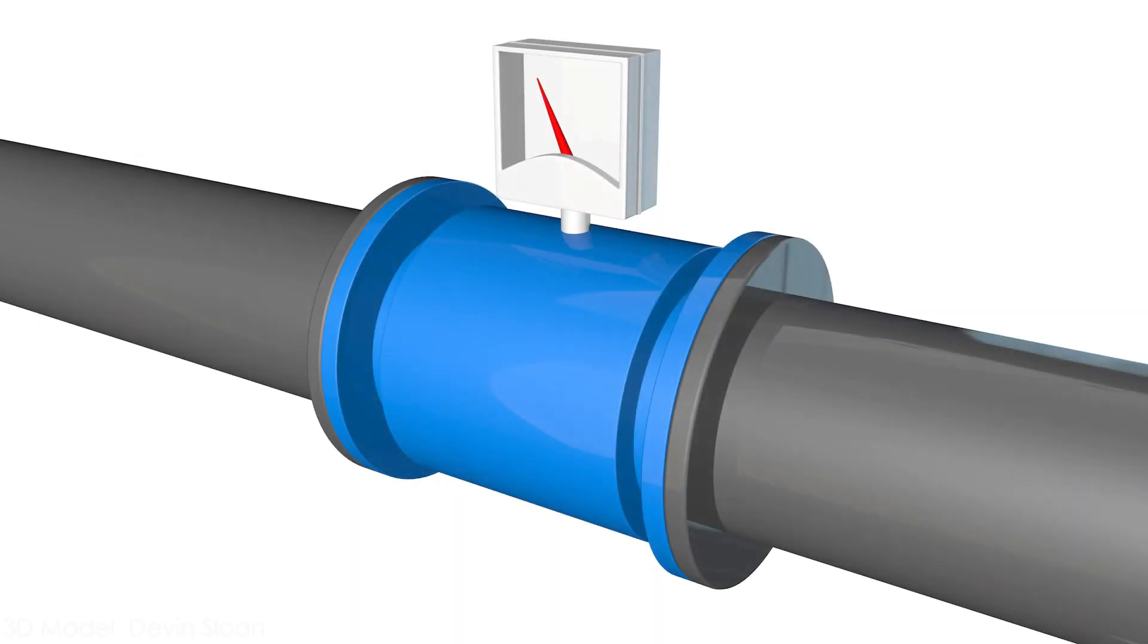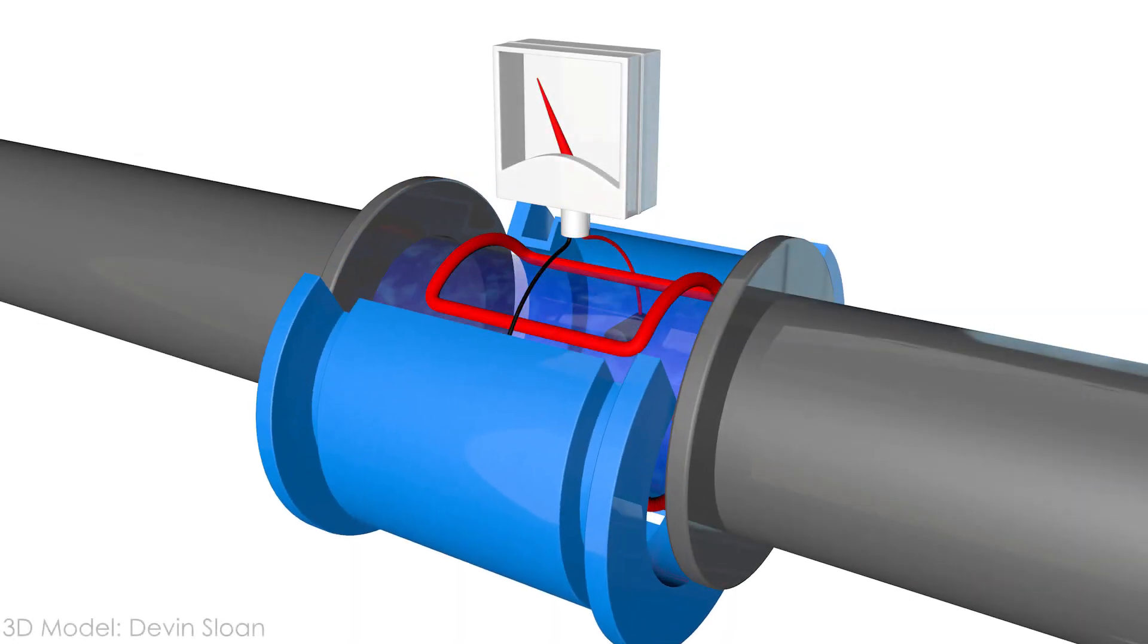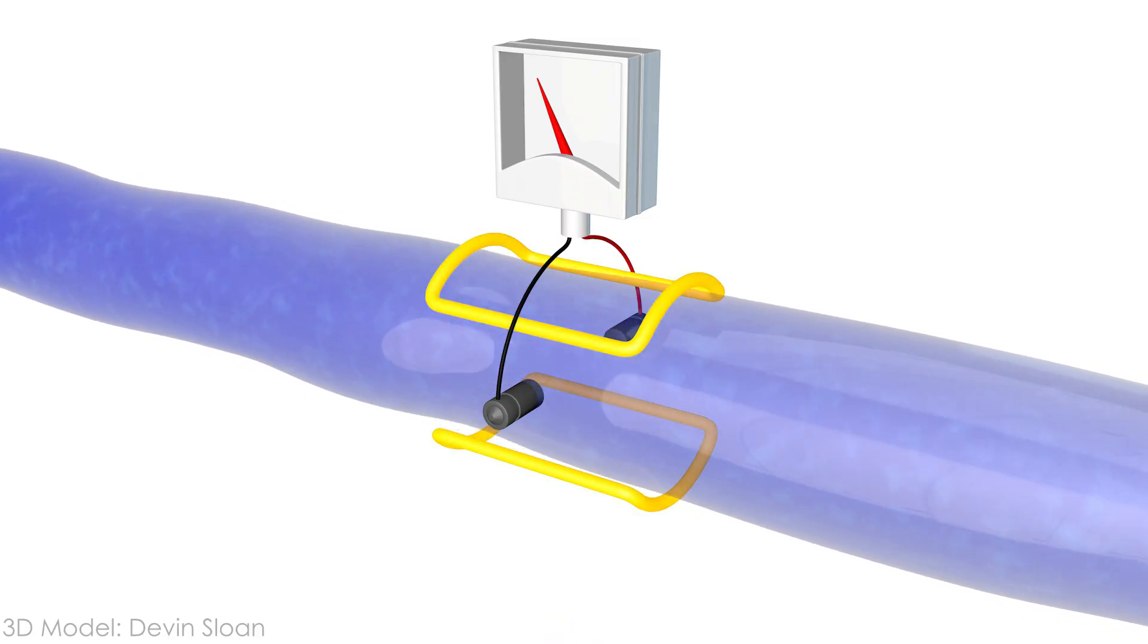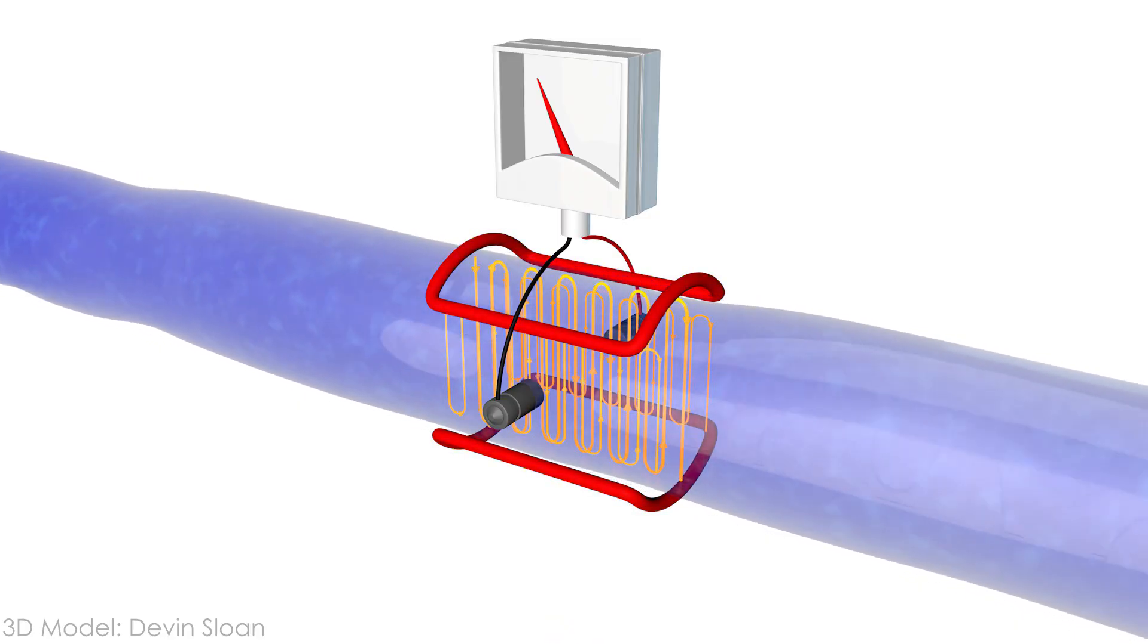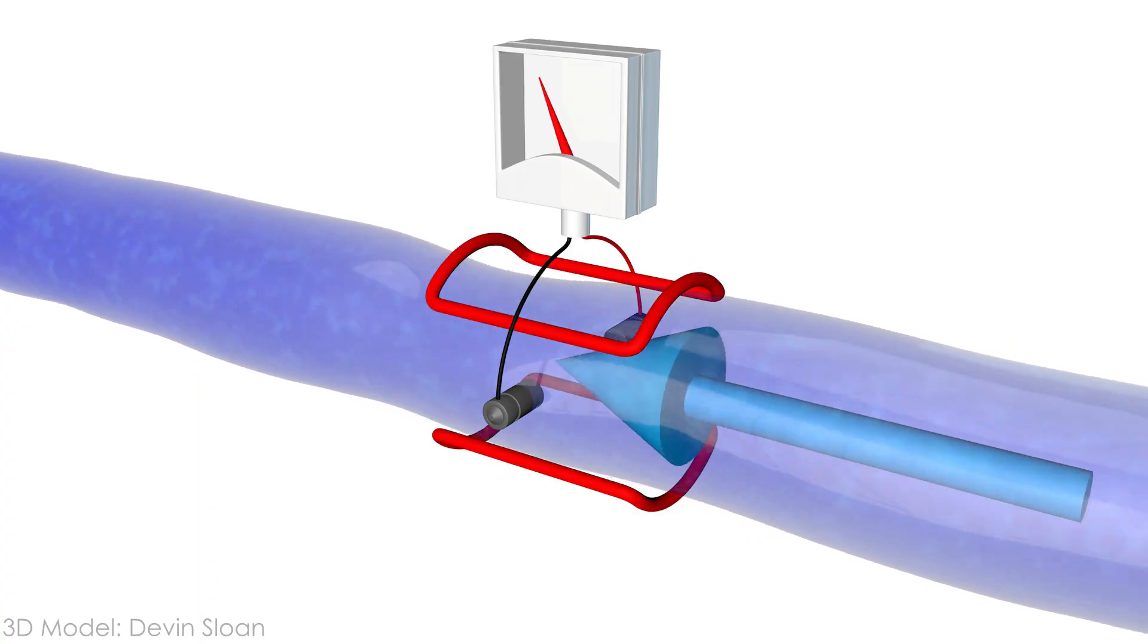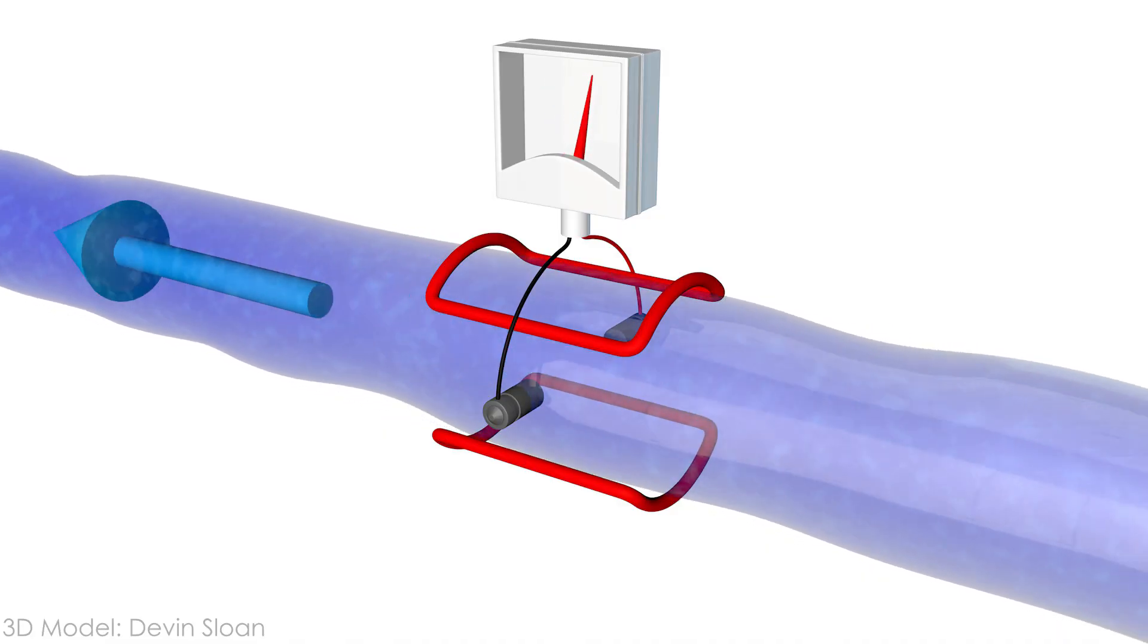A magnetic flow meter works exactly the same way, except instead of wire, the conductor is a fluid in a pipe. Magnets outside the pipe create a magnetic field. Electrodes are located perpendicular to the magnets. A conductive fluid moving through the pipe will generate a voltage between the electrodes due to Faraday's law. The faster the fluid moves through the pipe, the higher the voltage.